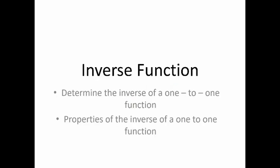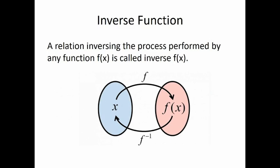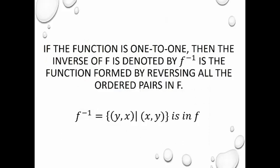To continue, let's discuss inverse functions. We determine the inverse of a one-to-one function and will look at the properties of the inverse of a one-to-one function. An inverse function is a relation that reverses the process performed by any function f(x), called f inverse, written as f raised to negative one. The x values will return to form a new function — that is the inverse.